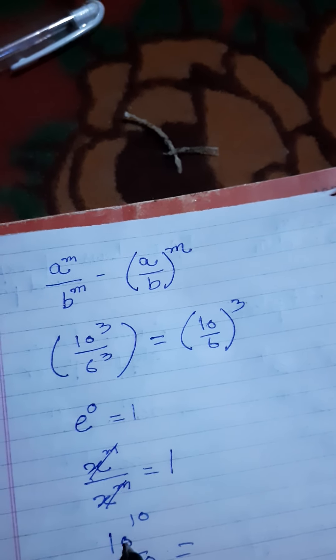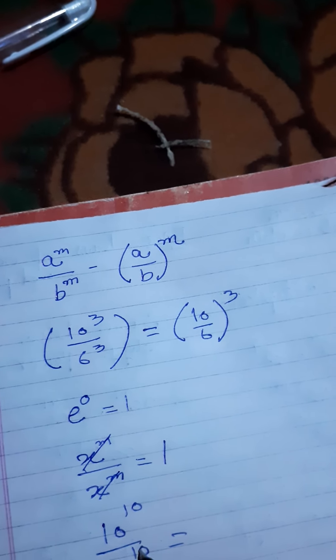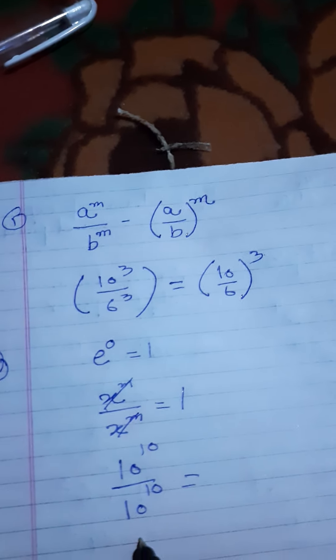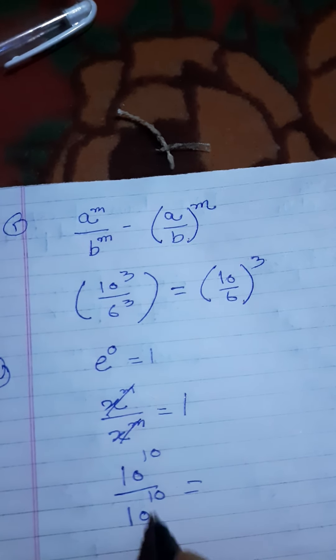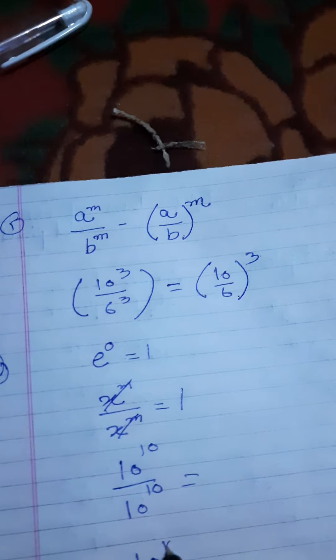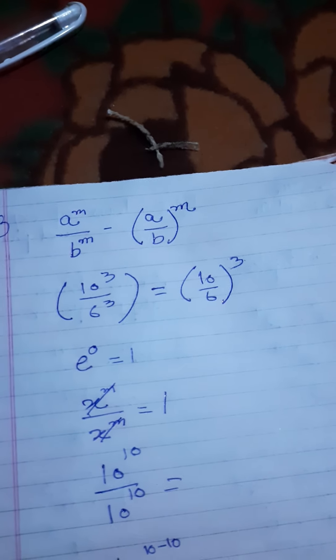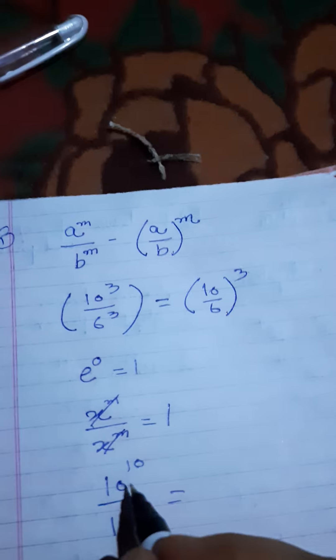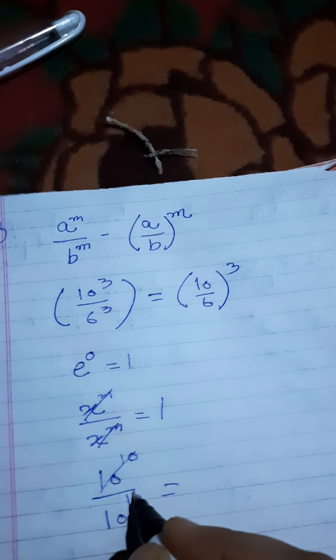Another example: 10 raised to power 10 divided by 10 raised to power 10. When bases are the same, power should be subtracted, so 10 minus 10 equals 10 raised to power 0.